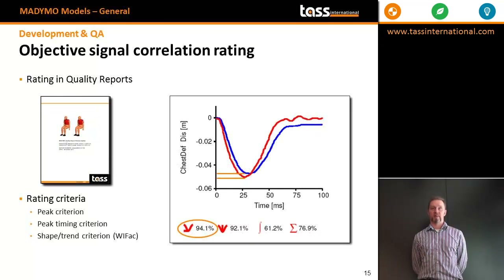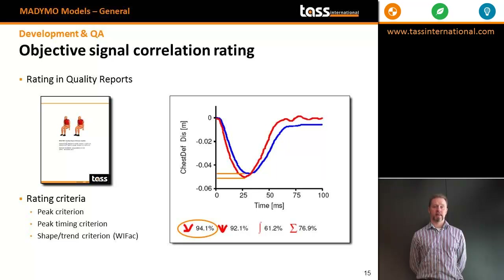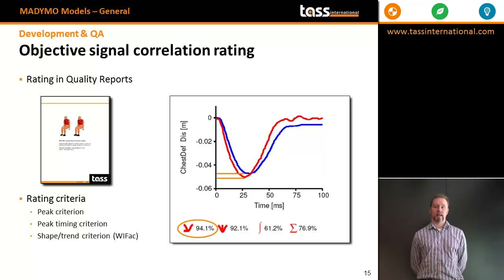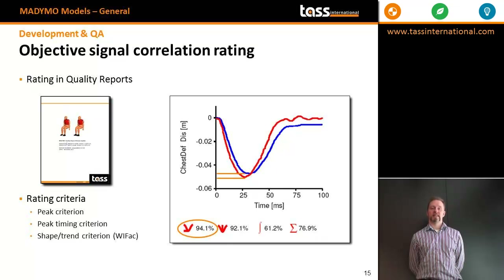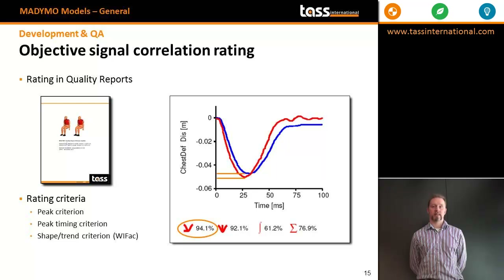For our main models, we present all data in quality reports. These list all experiments used for validation and the correlation rated on peak level, peak timing, and general shape and trend criteria. In addition, there is an overall score for the model based on its correlation to the entire validation set.